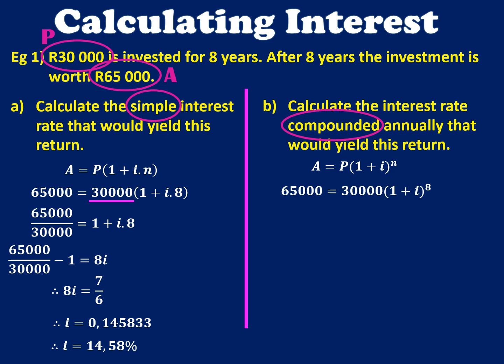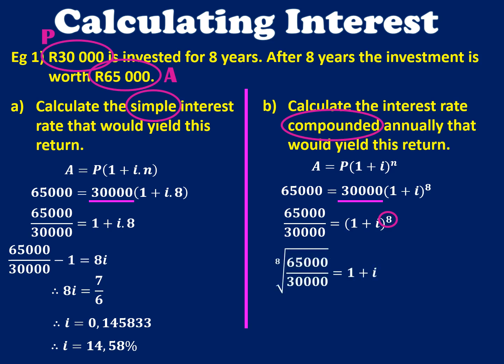The order of calculations is slightly different here. First, we get rid of the 30,000 by dividing by 30,000 on the left-hand side. Next, we have to get rid of the exponent — to do that, we take the 8th root of the other side. The 8th root of that fraction gives us 1.10147, and then we subtract 1 to get 0.10147. Multiplying by 100, we get 10.15% rounded to two decimal places. So you actually need a lower interest rate if it's compounded, because you're earning interest on interest — only 10.15% compounded, compared to 14.58% for simple interest.